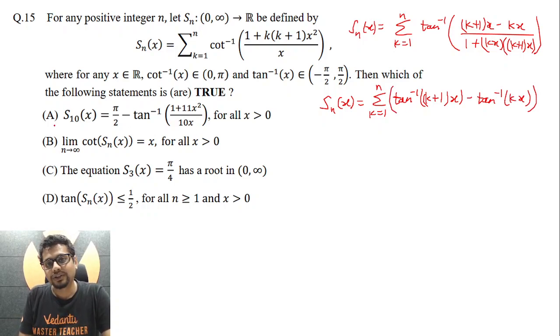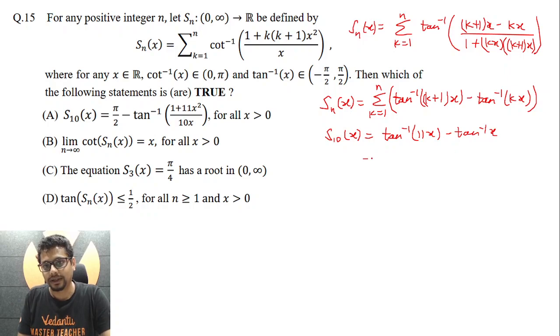Now coming to the first option, S_10(x). As you write for k equal to 1, k equal to 2, k equal to 3, so and so forth up till k equal to 10 and you add, you would get S_10(x) as tan inverse 11x minus tan inverse x. So this essentially becomes tan inverse (11x minus x), that is 10x, divided by 1 plus 11x multiplied by x, that is 11x square.